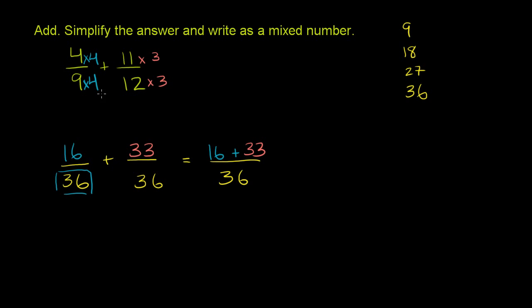And 16 plus 33 is what? 6 plus 33 would be 39. And then you have another 10, so it's 49. So it's equal to 49 over 36.